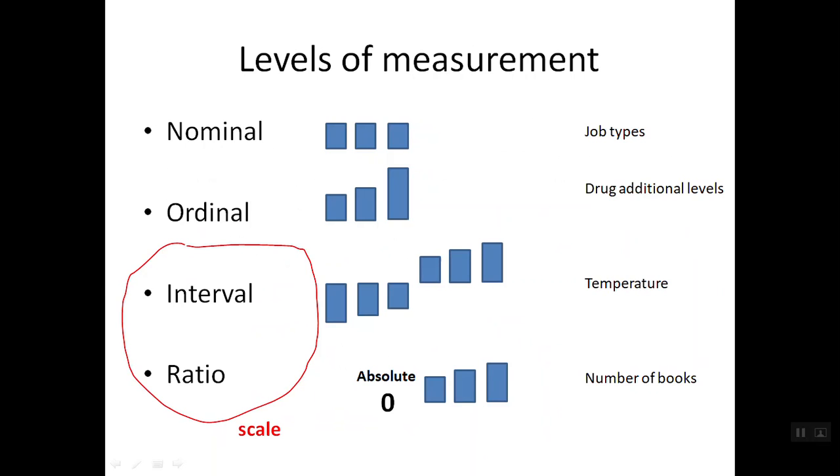Interval variable. One such example is temperature. So you have minus two degree, zero degree, two degree. Where ratio is really interval with an absolute zero as the beginning. One example is number of books.